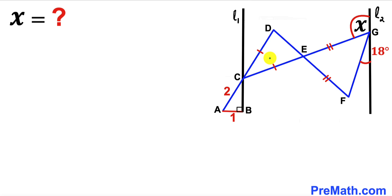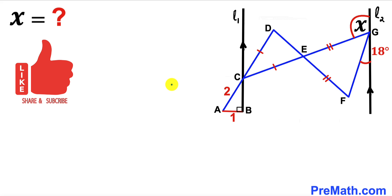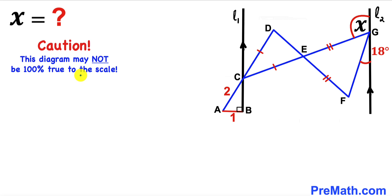Welcome to PreMath. In this video we have two isosceles triangles: triangle CDE and triangle EFG, fully confined between two parallel lines L1 and L2. One of the angles is 18 degrees and the other is represented by X. We also have a right triangle ABC whose side AB is one unit and hypotenuse AC is 2. Please note that this figure may not be 100% true to scale.